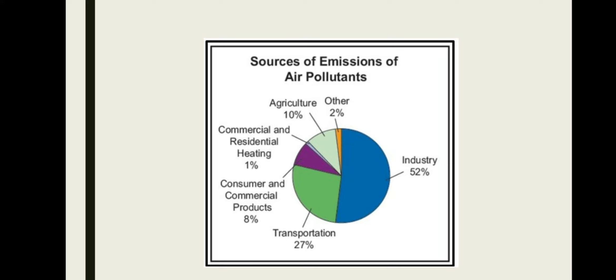And last, I will show you what are the different sources of emissions of air pollutants. For example, from agriculture we are getting 10% air pollutants. Then industry - most of the cases industries are liable for this air pollution at 52%, commercial and residential heating 1%, consumer and commercial products 8%, transportation 27%, and other 2%.